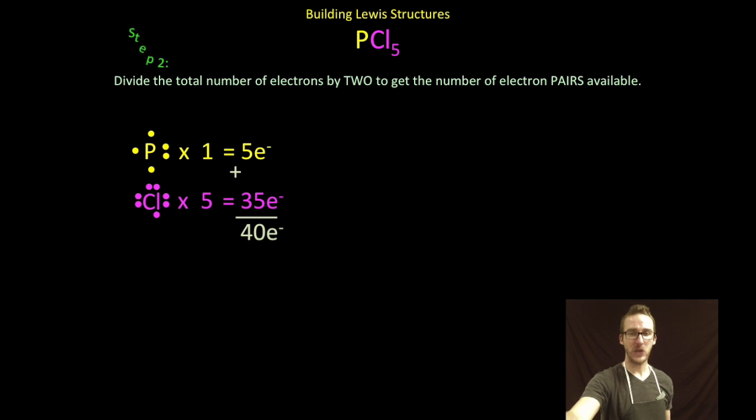Step two, divide the total number of electrons by two to get the number of valence electron pairs available. So, we've got 40 valence electrons total. Divide that by two, we've got 20 pairs of valence electrons to work with when building our Lewis structure.